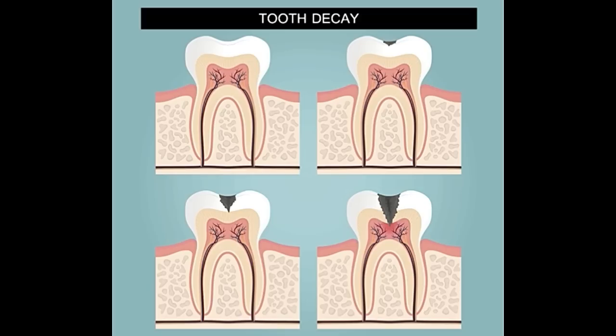Gums: Gingiva is a tissue that covers the upper and lower jaw. It is a soft tissue lining surrounding the base of the teeth, covered by a mucous membrane. In case of healthy adults, the color of the gums should be pink, though the color can vary.